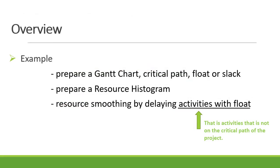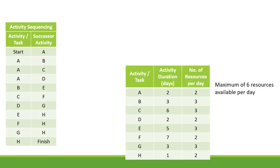In the example, we will prepare a Gantt chart, identify the critical path, and also the float of activities. We will prepare a resource histogram, and then do resource smoothing by delaying activities with float — that is, activities not on the critical path. As part of the example, we have the activity sequencing, activities' duration, and the number of resources per day per activity. There is also a constraint that there is a maximum of six resources available per day.